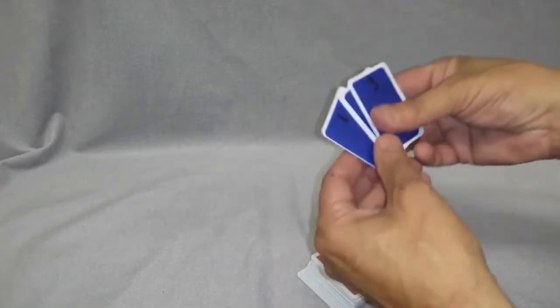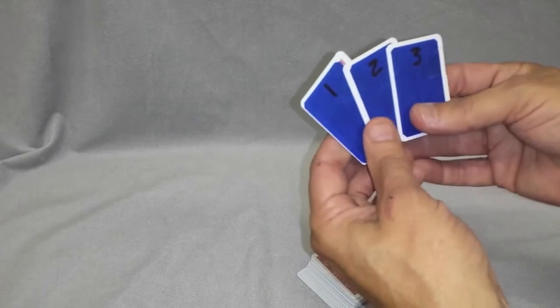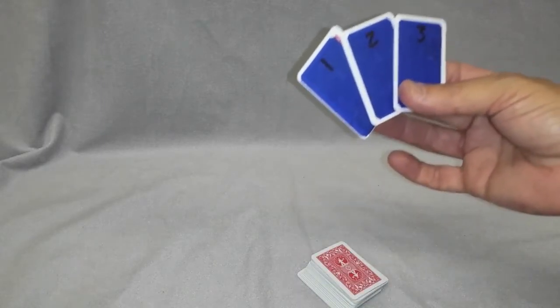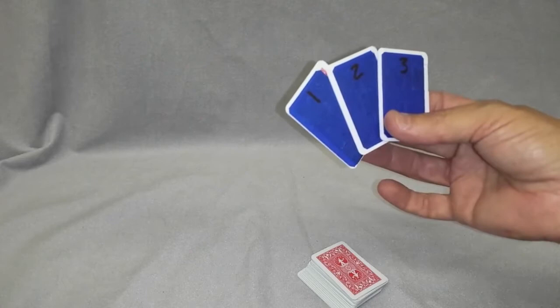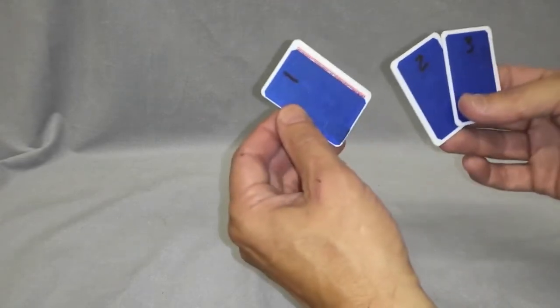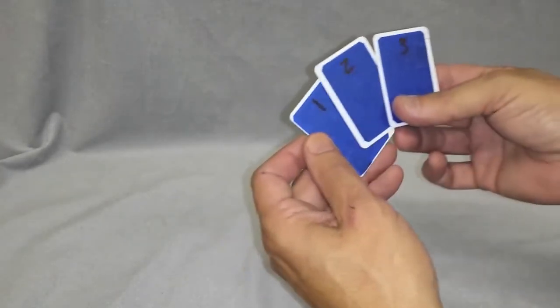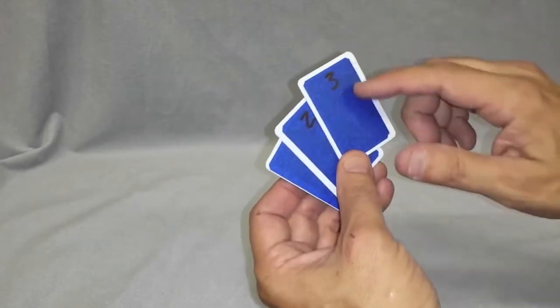Now we have the gimmick cards. It's very important that you pay attention to this portion or it will fail on you. Each card is a shim. Number one is the bottom left, number two is the middle, and number three is the upper right.